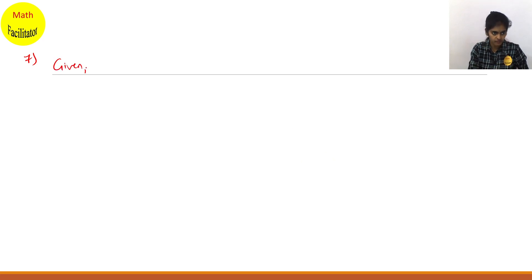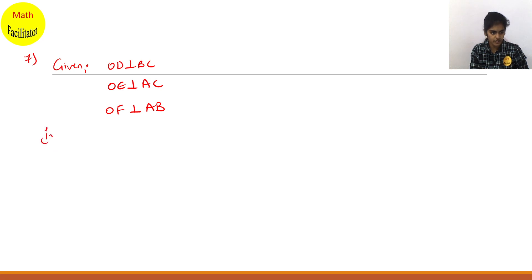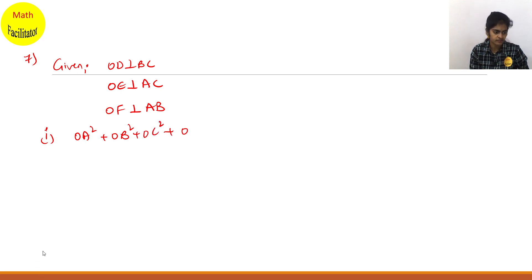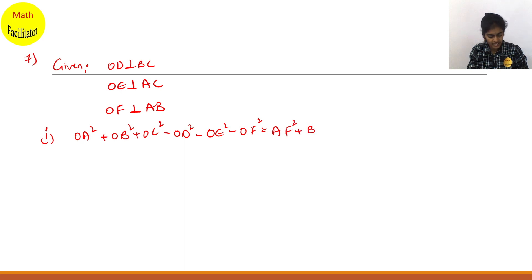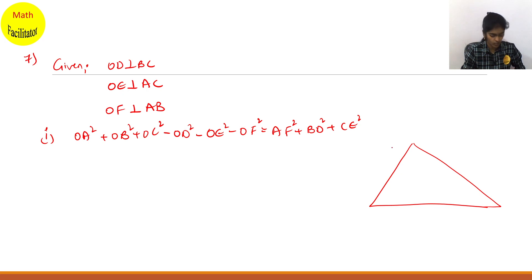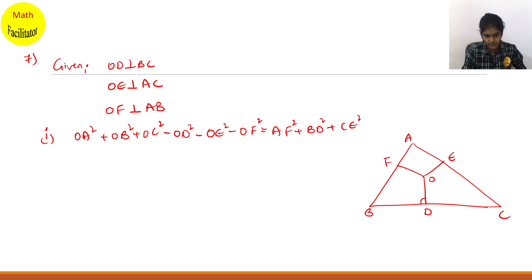Given: OD is perpendicular to BC, OE is perpendicular to AC, OF is perpendicular to AB. You have to show that OA square plus OB square plus OC square minus OD square minus OE square minus OF square equals AF square plus BD square plus CE square. Looks complicated but it's very easy. You have triangle ABC — this is A, B, C. O is a point inside this triangle, and this is D, E and F. All these are perpendicular.